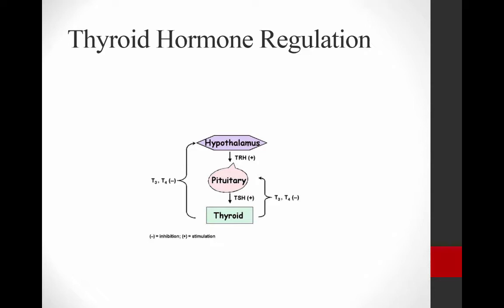The hypothalamus will secrete TRH, which then acts on the pituitary to cause thyroid-stimulating hormone secretion. This goes directly to the thyroid gland. Remember, there are two of them on either side of the trachea. This causes the active hormones T3 and T4 to be secreted from the thyroid gland. Importantly, we need to remember that TSH is 100% responsible for all the actions of the thyroid gland. We will talk about how we look at and measure TSH to help us understand how the thyroid gland is working.